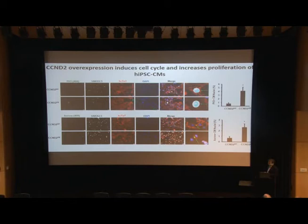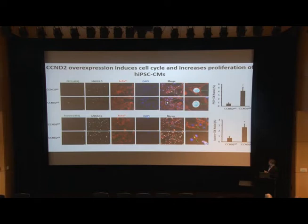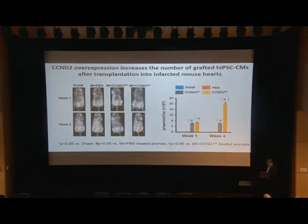Next, we checked cell cycle activity to see if overexpression of this gene can actually drive the cell cycle. We utilized a battery of cell cycle markers. I wanted to highlight two proliferation markers: phosphohistone H3 and aurora B kinase. You can see that overexpression of the Cyclin D2 gene drives the cell cycle compared to iPSC-derived cells without overexpression, which we call wild-type cells. Next we examined how these cells behave when delivered into the injured heart compared to wild-type cells.